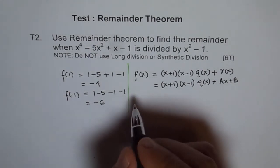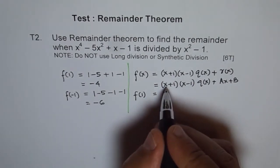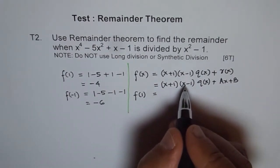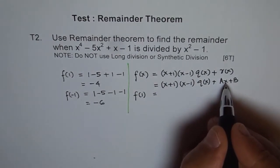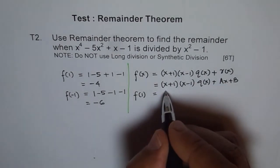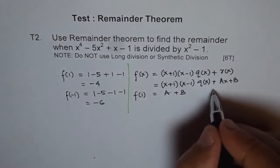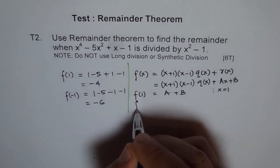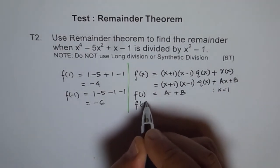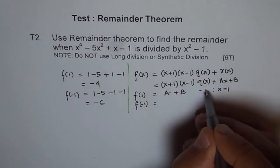Now we know f of 1. What is f of 1 for us? 1 means we put 1 here. 1 plus 1 is 2, 1 minus 1 is 0. Anything multiplied by 0 is 0. So first term will be 0 and we are left with a times 1 plus b. So we're left with a plus b. This is when x is 1. Let us call this equation 1.